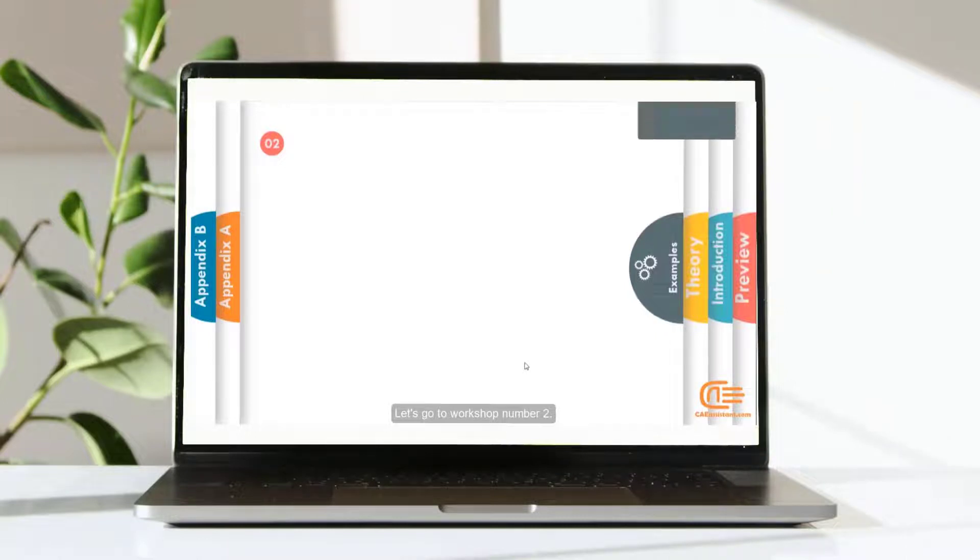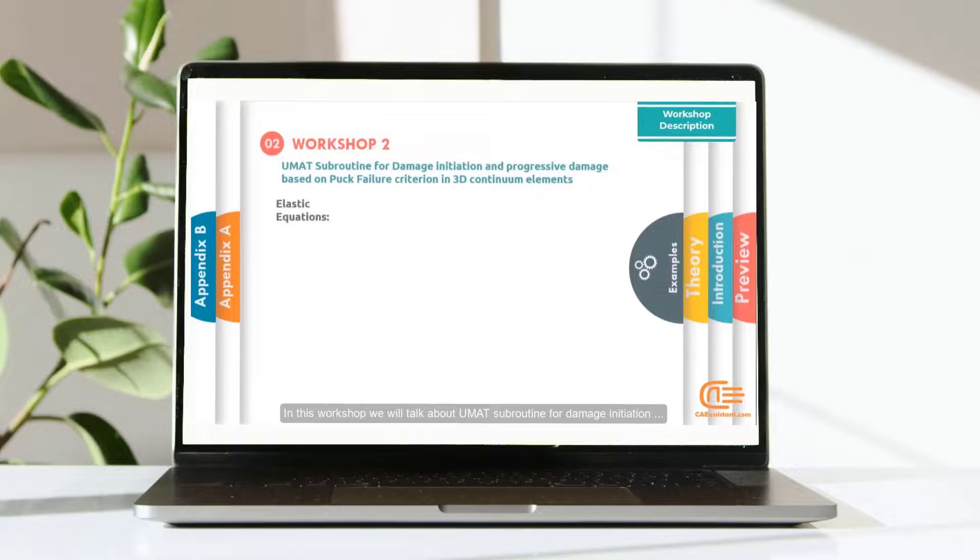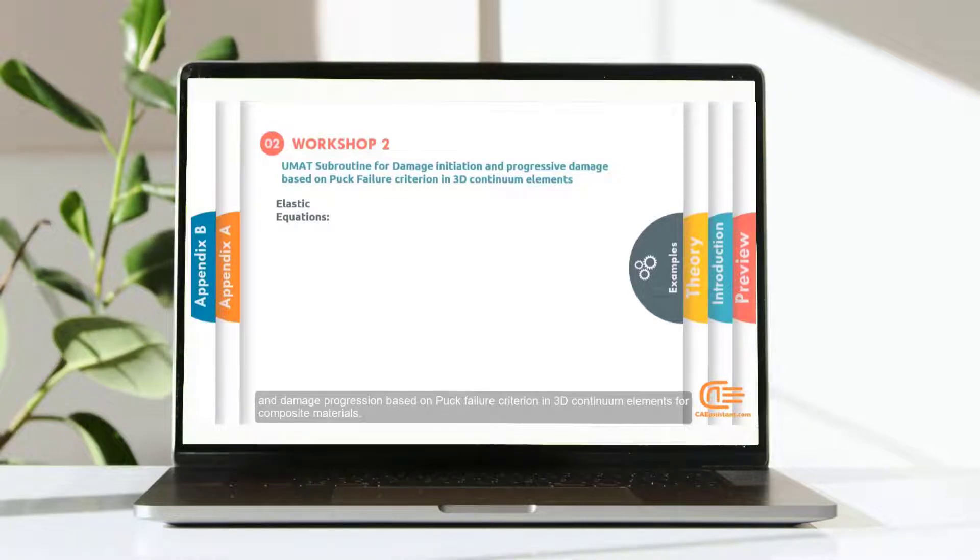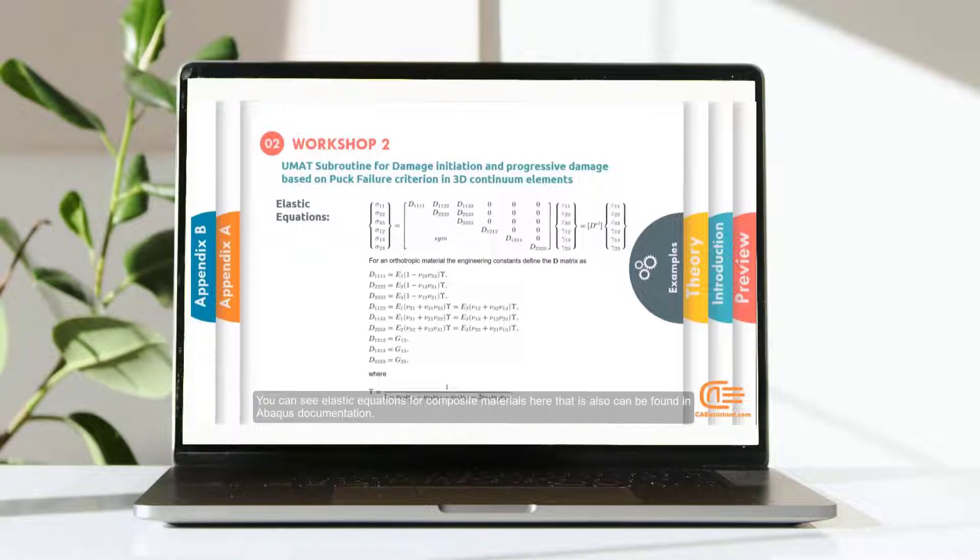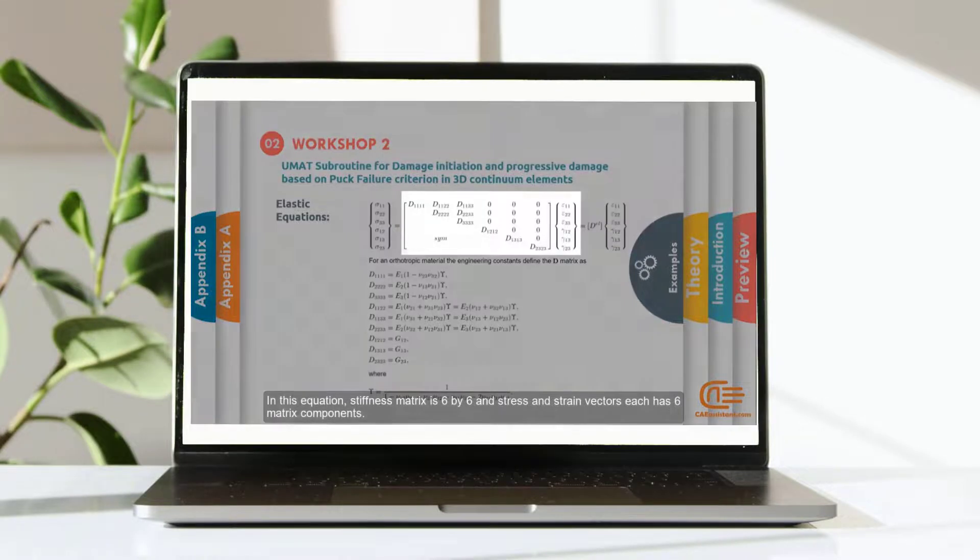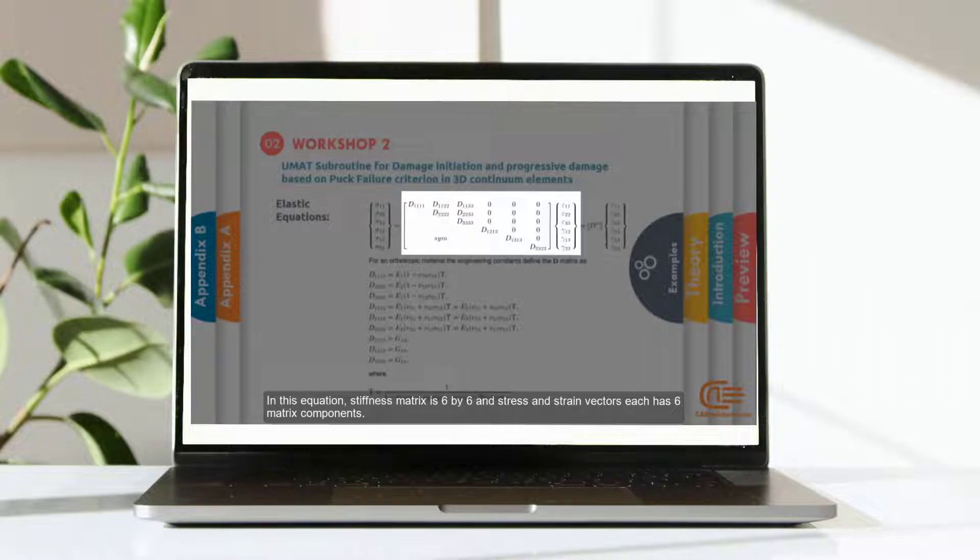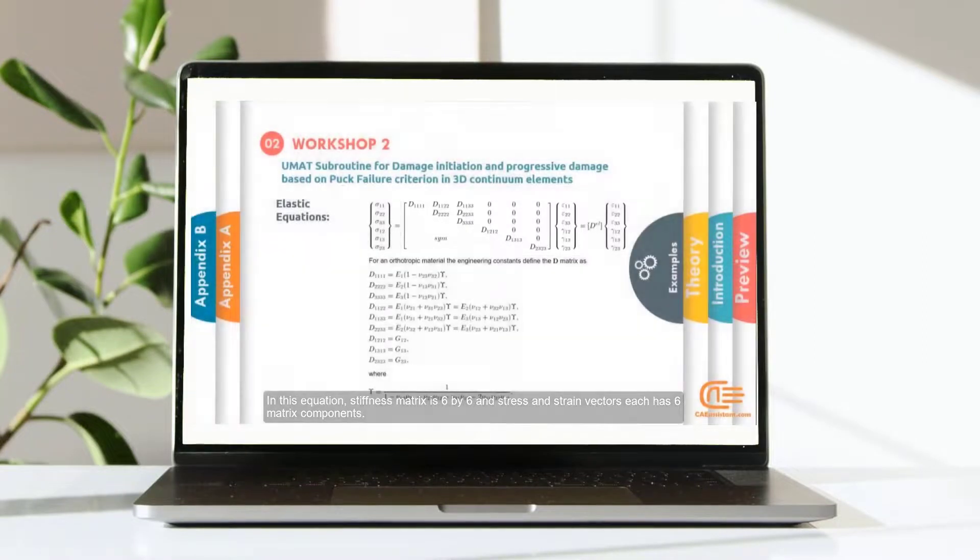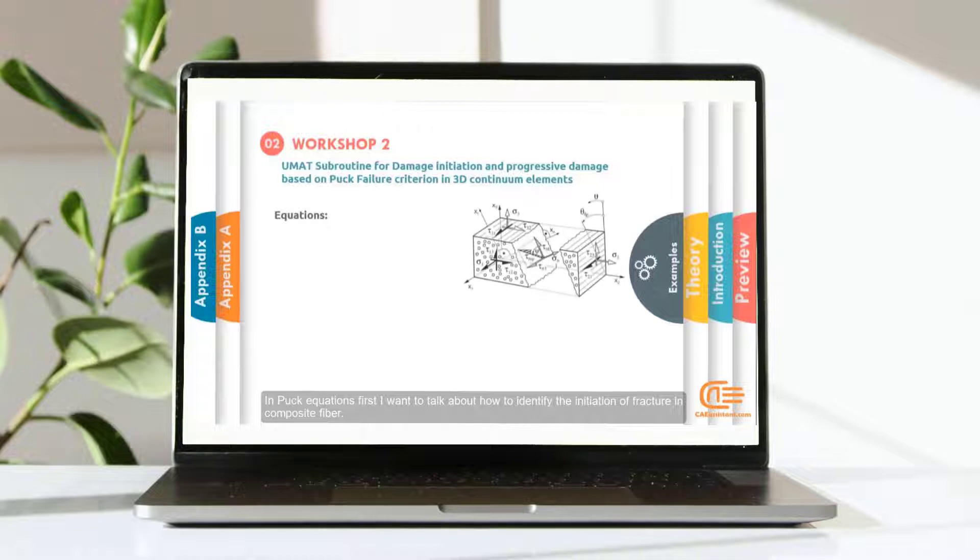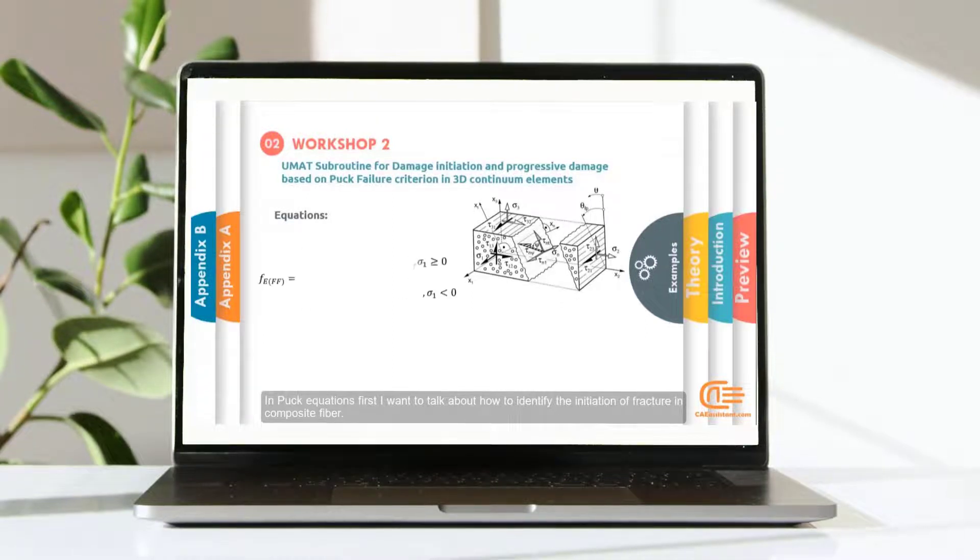Let's go for workshop number 2. In this workshop, we will talk about UMAT subroutine for damage initiation and damage progression based on Puck failure criterion in 3D continuum elements for composite materials. You can see elastic equations for composite materials here that is also can be found in Abacus documentation. In this equation, stiffness matrix is 6 by 6 and stress and strain vectors each has 6 matrix components. In Puck equations, first I want to talk about how to identify the initiation of fracture in composite fiber.